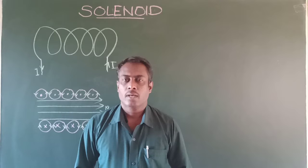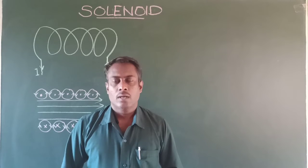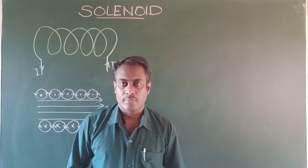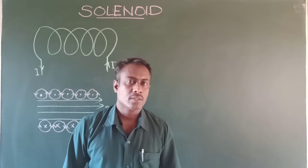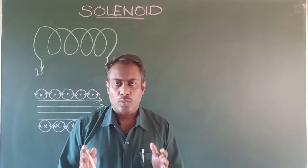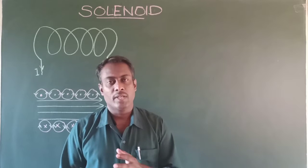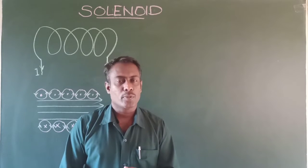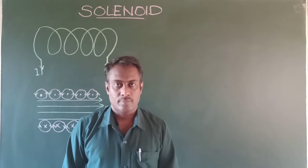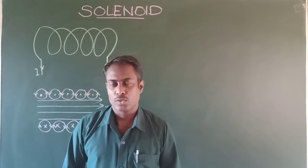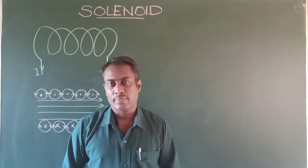Today we are going to discuss another topic which is about solenoid. In the previous class we learned what is the magnitude of magnetic field produced around a current carrying loop and which law is applied to calculate the magnetic field around a circular loop. We also learned that the magnitude of the magnetic field decreases as we move away from the center of the loop, so the magnetic field is non-uniform. A device called solenoid is used to produce a uniform magnetic field.